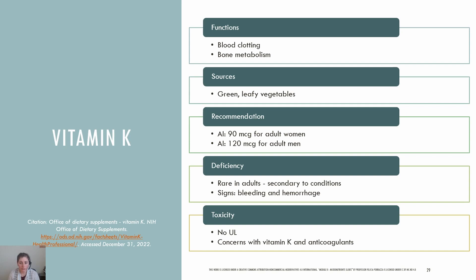Vitamin K refers to a family of compounds and is a fat-soluble vitamin that plays two major roles in the body: blood clotting and bone metabolism. The highest source of vitamin K is green leafy vegetables, though there are small amounts in fermented foods like natto and cheese. Other sources include vegetable oils and some fruits. The AI for vitamin K is 90 micrograms for adult women and 120 micrograms for adult men. Vitamin K deficiency in adults is rare and typically secondary to malabsorption disorders or medications that interfere with vitamin K metabolism. Two signs of vitamin K deficiency are bleeding and hemorrhage in severe cases. There's no UL for vitamin K since risk of toxicity is low and no adverse side effects were seen with foods or supplements. Those who are taking anticoagulants need to maintain a consistent intake of vitamin K, as drastic changes can increase or decrease the medication's effect.